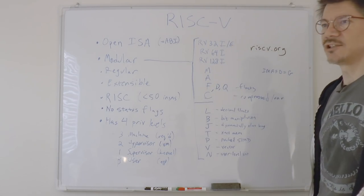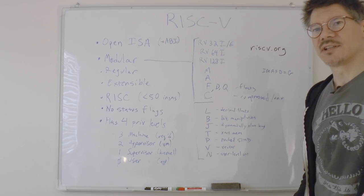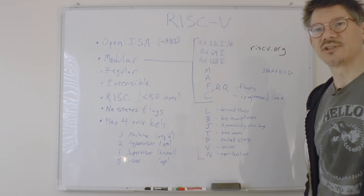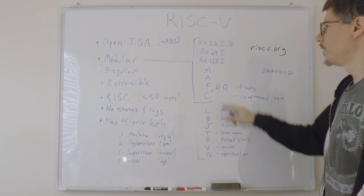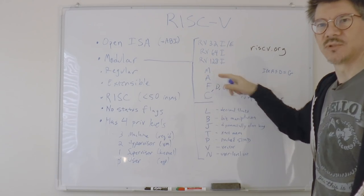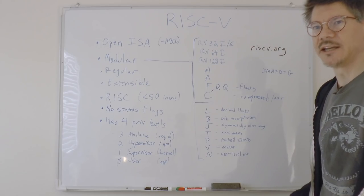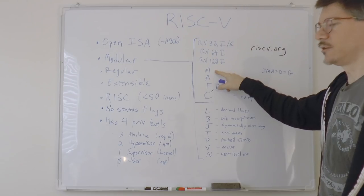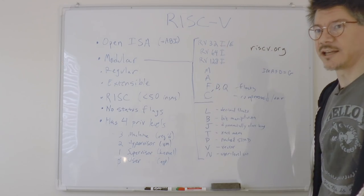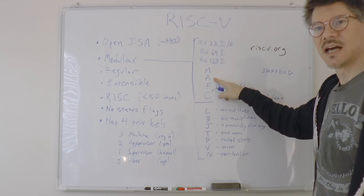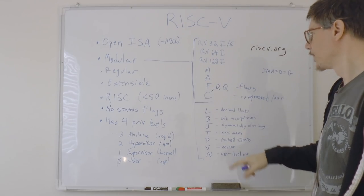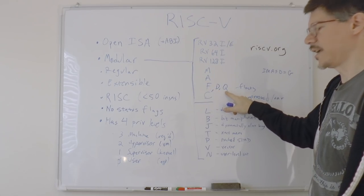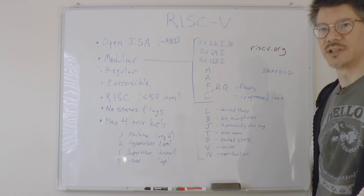There's also the E extension for embedded processors, which essentially reduces the number of registers available. Then there's the M extension, which stands for multiply and divide for integers. Again, this is an optional extension. The only required extension is I. A are for atomic memory operations. F, D, and Q are for single, double, and quad precision floating point numbers.